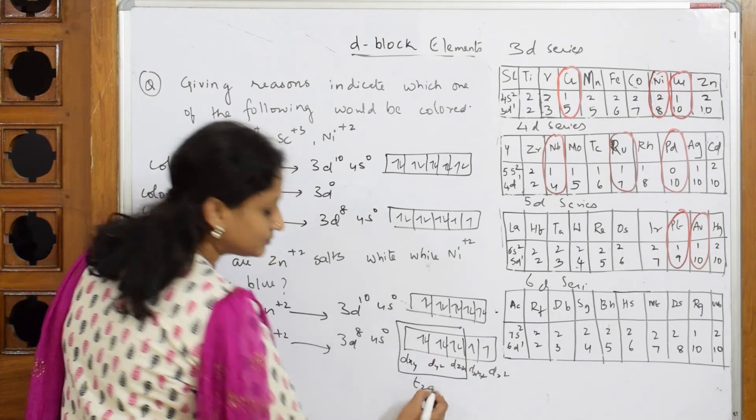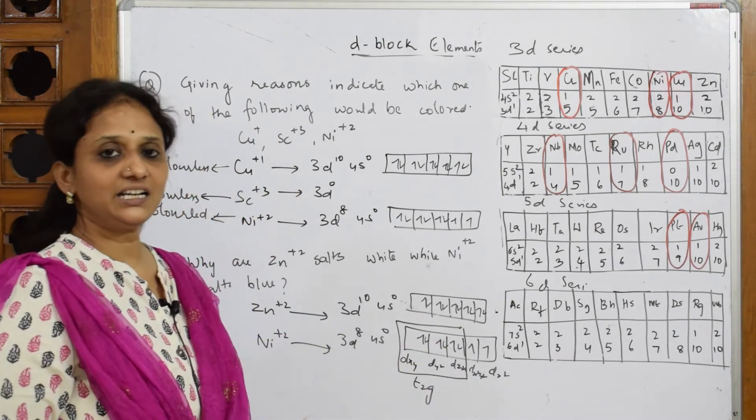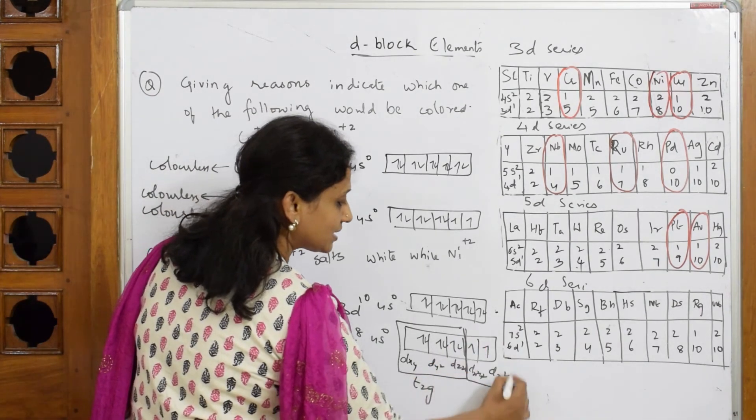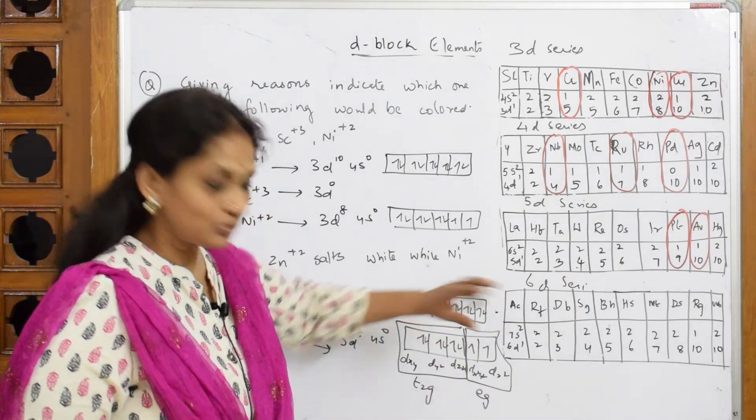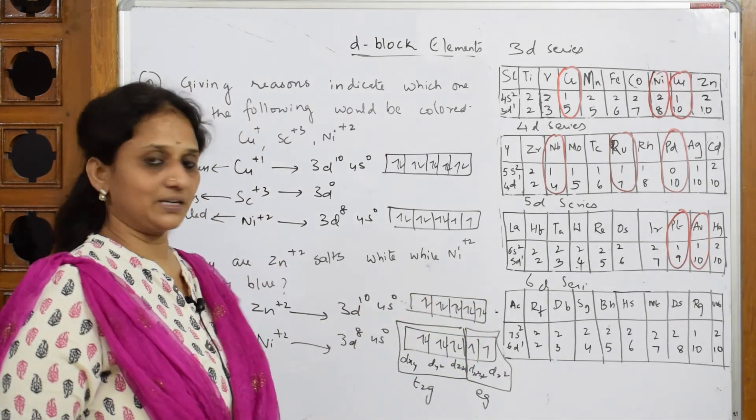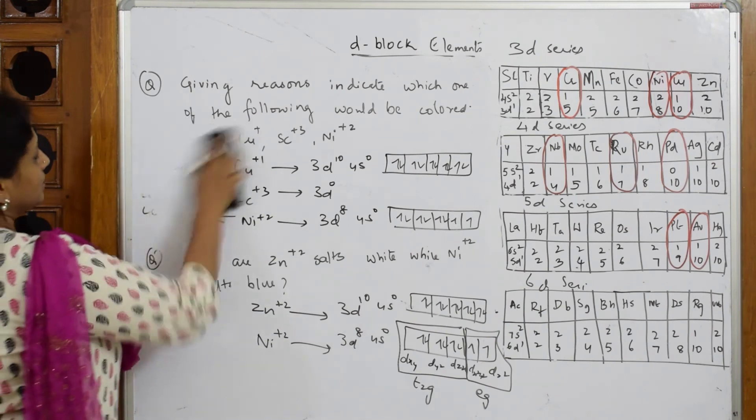Triplet means three degenerate set. And this whole set is called doublet degenerate set. These two doublet, these three triplet. Let me erase this and use the board.